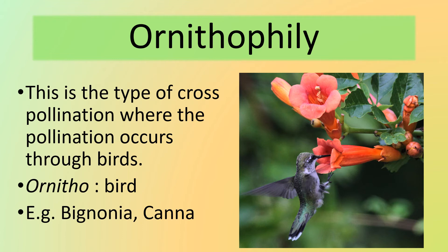Let's look at ornithophily. This is the type of cross-pollination where pollination occurs through birds. 'Ornitho' means bird and 'phily' means affinity. The flowers are brightly colored to attract birds and produce abundant amounts of nectar. The pollen grains are produced in large amounts and the floral parts are leathery. Examples are Bignonia and Canna. Here we have a hummingbird drinking nectar from a Bignonia flower.